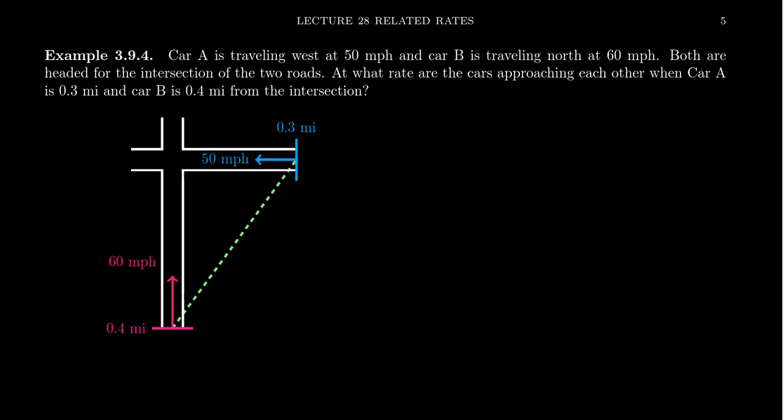In this diagram, there's a right triangle in play because we have a northbound road hitting an east-west road. This right triangle forms the relationship between the cars. The speeds — 50 and 60 miles per hour — are statements about velocity, which is the derivative of a position function. Therefore, these are statements about the derivatives of things, which makes this a related rates problem.